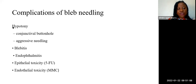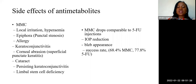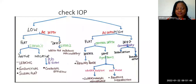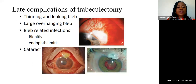Anti-metabolites have their own side effects: local irritation, epiphora, allergy, and keratoconjunctivitis. Several studies have shown that mitomycin C and 5-fluorouracil have comparable results in terms of intraocular pressure reduction and bleb appearance. Mitomycin C has a success rate of 68.4% and 5-fluorouracil has a success rate of 77.8%. This algorithm shows trabeculectomy, the complications that can arise, how to identify them, and how to treat them, including late complications such as thinning and leaking of the bleb, large overhanging bleb, bleb-related infection, and cataract.